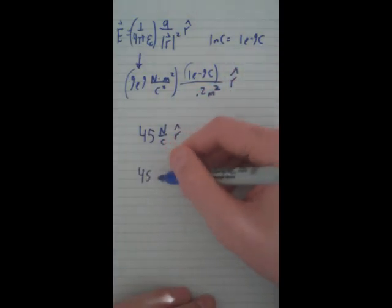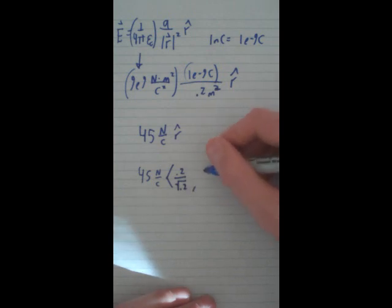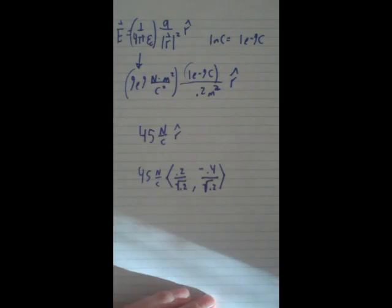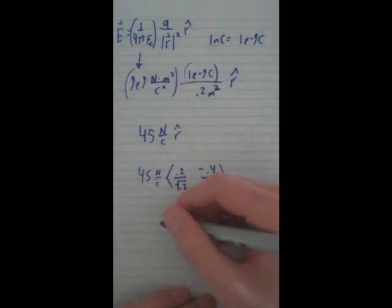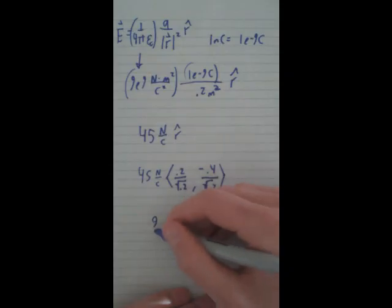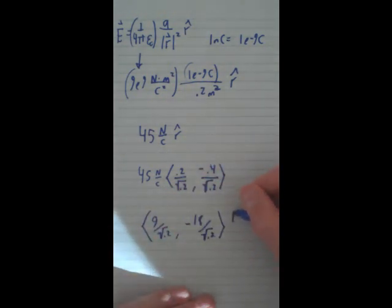So this is going to be 45 newtons per coulomb times r̂, which is 0.2 over square root of 0.2, and negative 0.4 over square root of 0.2. What that's going to equal, once you do all your algebra again, is 9 over square root of 0.2 and negative 18 over square root of 0.2. And that will be our answer.